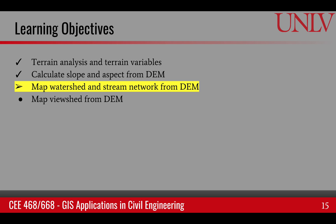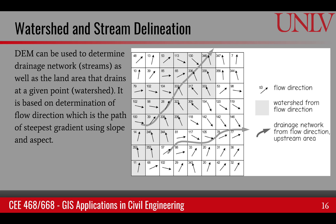This learning objective talks about the mapping of the watershed and stream network using a DEM. At the core of this process, we are using slope and aspect, which come from the elevation. We find all the flow directions in an area. Given a cell, if I know the slope and the aspect, that tells me which way is the direction of steepest descent. Since water flows towards the path of steepest descent, that gives me the flow direction for that pixel. If I have flow directions of all the pixels computed, then I can see where they are converging and where they will form a stream.